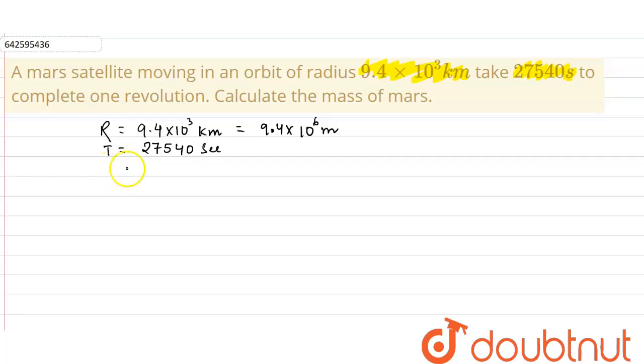So let mass of Mars equal M, okay. So the time period for a satellite to revolve around the mass is given by the expression T² = 4π²R³/GM.